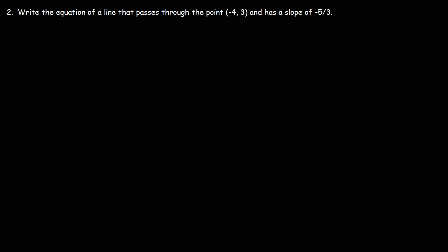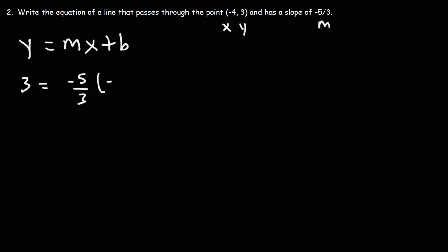Now let's try another example — feel free to pause the video to work on it. Write the equation of a line that passes through the point (-4, 3) and has a slope of -5/3. Starting with y = mx + b: x is -4, y is 3, and m is -5/3. So let's replace y with 3, m with -5/3, and x with -4.